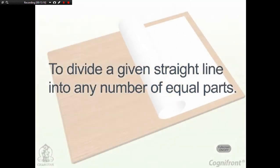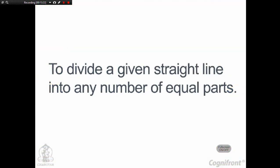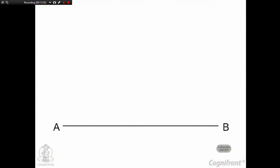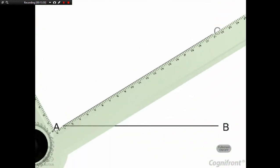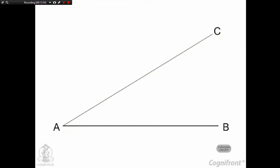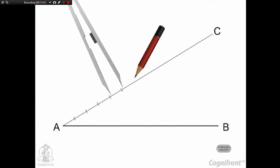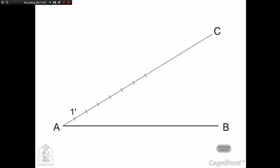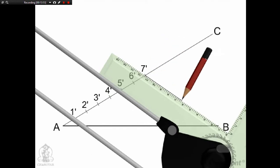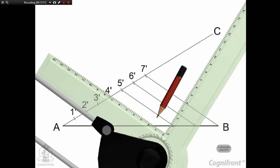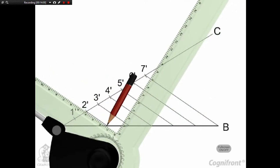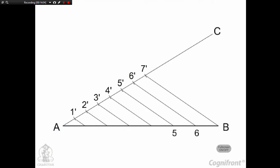To divide a line into 7 equal parts: consider line AB of any length and draw line AC making an angle of less than 30 degrees with AB. With the help of dividers, mark 7 equal parts of any suitable length on line AC, marking points 1', 2', 3', 4', 5', 6' and 7'. Join point 7' with point B of line AB, then draw lines parallel to 7'B cutting line AB at 6, 5, 4, 3, 2 and 1 respectively. The line AB has now been divided into 7 equal parts.